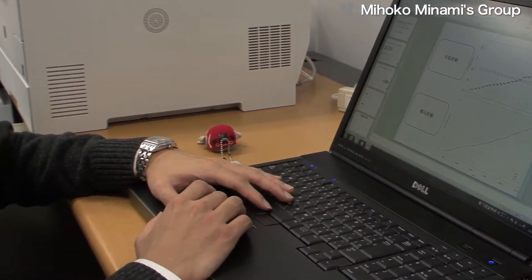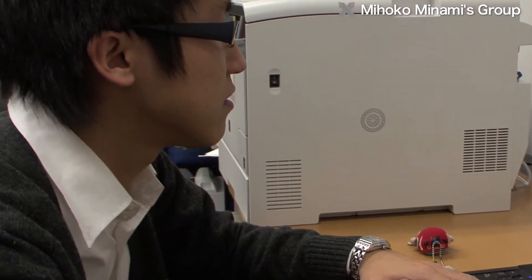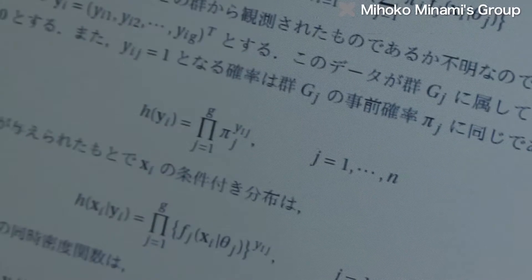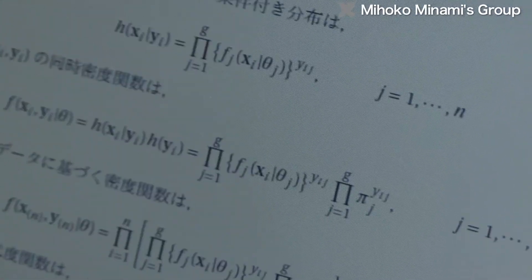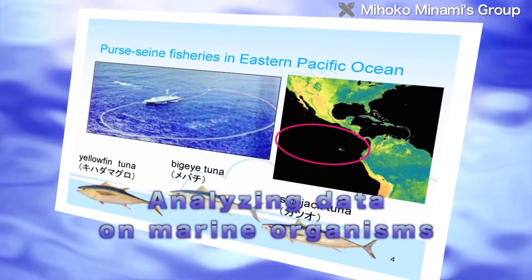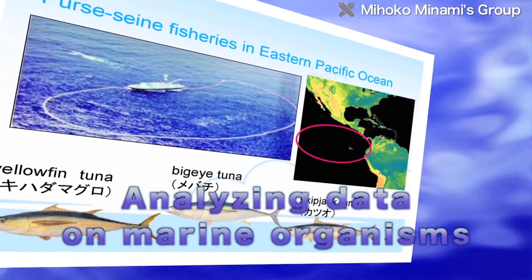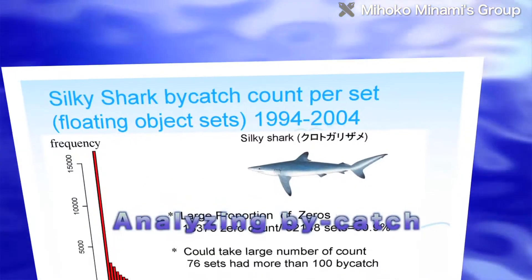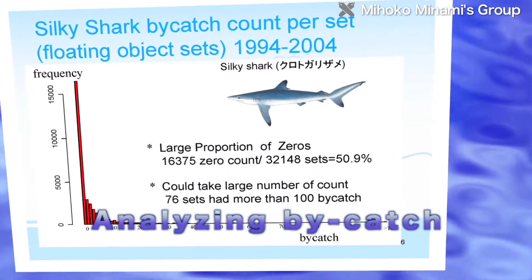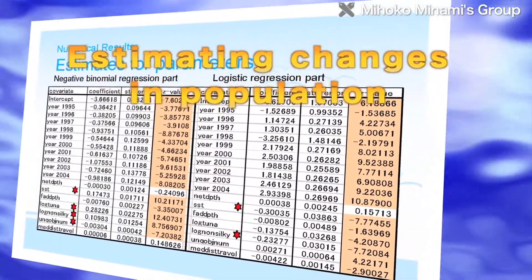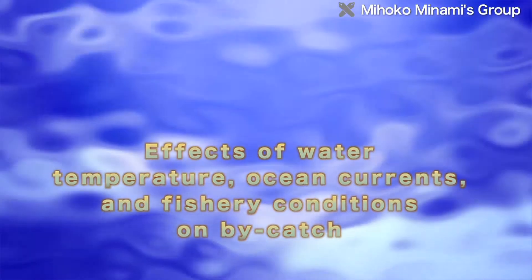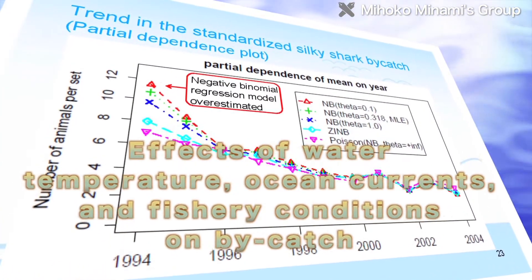Currently, the Minami group is analyzing data on the numbers of marine organisms, air pollution and weather. Regarding marine organisms, the group is doing joint research with the Inter-American Tropical Tuna Commission. This research analyzes the bycatch of turtles and sharks by purse-seine fisheries. The researchers estimate changes in the populations of these organisms, and study how factors such as water temperature, ocean currents and fishery conditions affect bycatch.